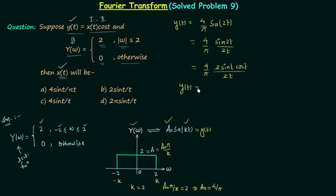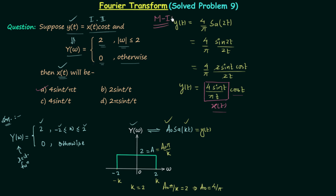So y(t) equals 4sin(2t)/(πt) multiplied by cos(t). It is clear that 4sin(2t)/(πt) is our signal x(t), because y(t) equals x(t)·cos(t) as given in the question. Therefore x(t) equals 4sin(2t)/(πt), so option A is the correct option. This is Method 1 to solve this question; now we will move to Method 2.